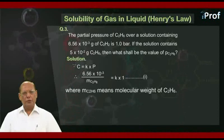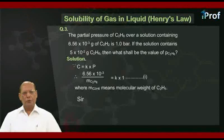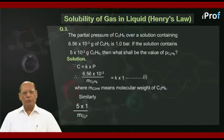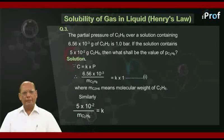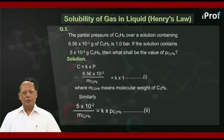Here, mc₂H₆ means molecular weight of C₂H₆. Similarly, 5 into 10 to the power minus 2 divided by mc₂H₆ is equal to k into pc₂H₆. Mark it as equation number 2.